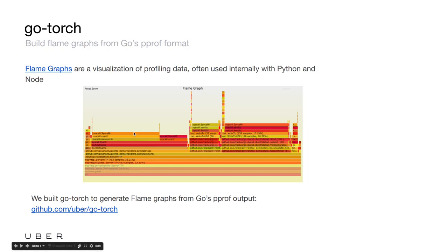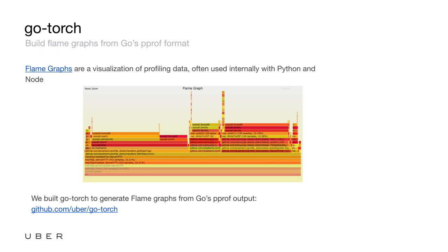Unlike most graphs, the x-axis doesn't actually represent the passage of time — this is a very common mistake. The x-position doesn't actually mean anything. The width of the box signifies how long that function spent on the CPU. A wider box means it spent a lot of time, maybe because the function is slow, or because the function gets called a lot. Contrary to what you might expect, the colors don't actually mean anything — they're just randomly chosen to look like fire.